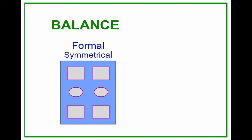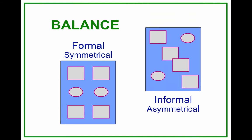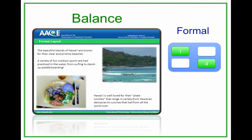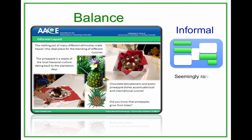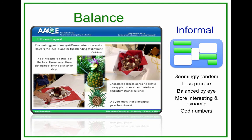Balance. We have two types of balance: formal balance that is symmetrical, and informal balance that is asymmetrical. When we look at formal balance, we find that it has a predetermined order. It's concise, but it's a little bit mechanical. To achieve formal balance we use objects in even numbers. Informal balance, on the other hand, is seemingly random — a little bit less precise. We use our eye to balance the objects, but it's a lot more interesting and dynamic. We use odd numbers of objects to achieve informal balance.